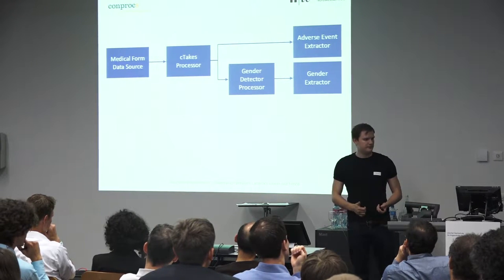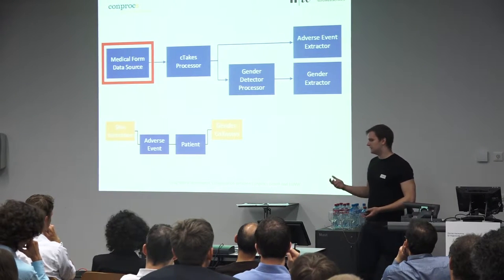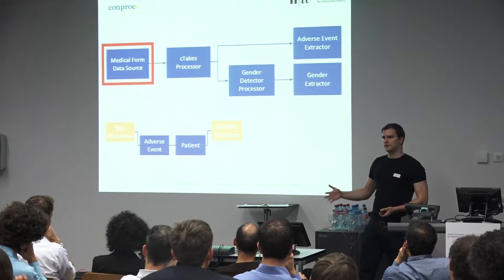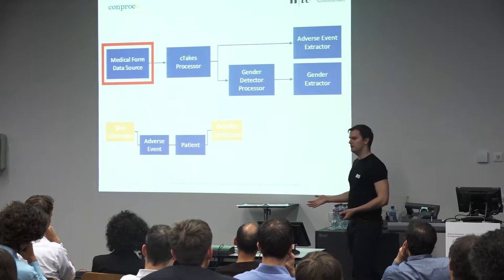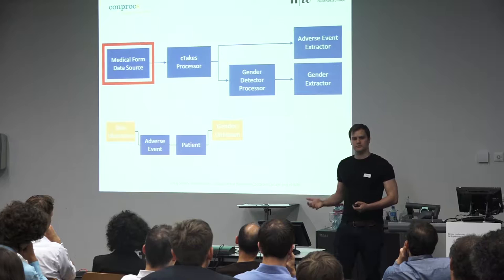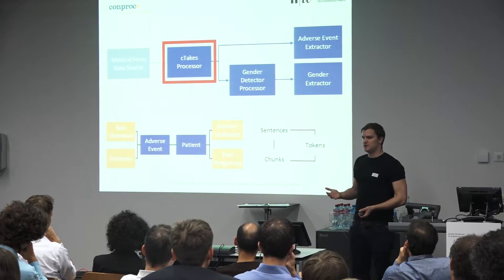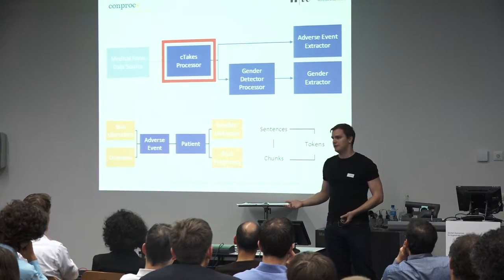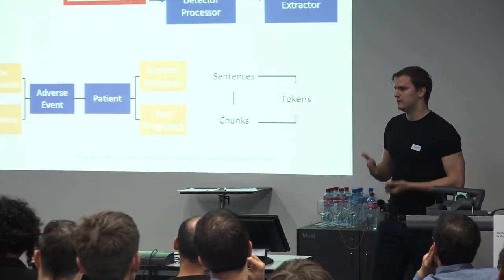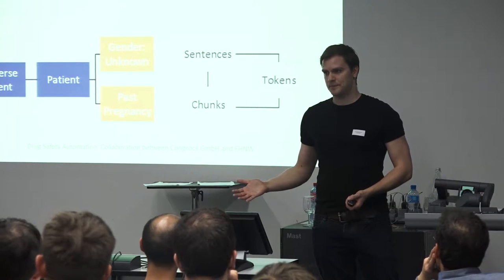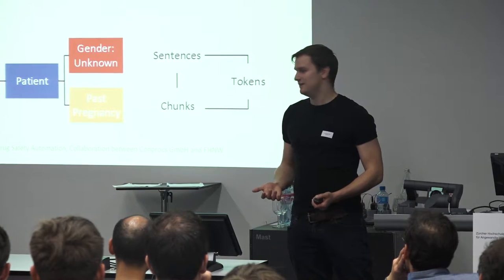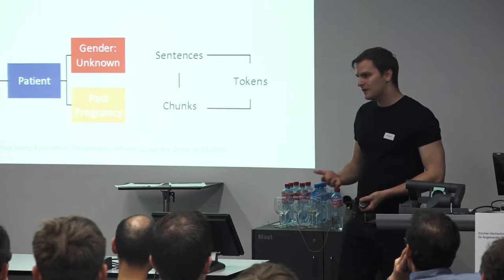In detail, our approach has to do three things: combine the different inputs, apply our heuristics, and extract information and put it inside the CIOMS form. We look at the medical form, extract all the information from there, and put it inside the knowledge graph. We then take the medical text, push it through cTAKES, and add all the information to our knowledge graph. Now we have all the information from different inputs combined and ready for our heuristics. In this case, we see we are missing vital information — we are missing the person's gender.